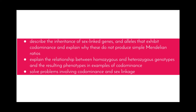Welcome to this video in the Blueprint of Life topic. This video is going to be looking at the following dot points: describe the inheritance of sex-linked genes and alleles that exhibit co-dominance and explain why these do not produce simple Mendelian ratios; explain the relationship between homozygous and heterozygous genotype and the resulting phenotype in examples of co-dominance; and solve problems using co-dominance and sex linkage. This video in particular is going to be looking at co-dominance, and there will be another one looking particularly at sex linkage.